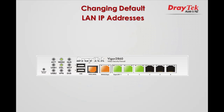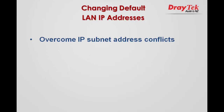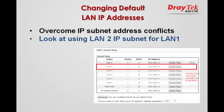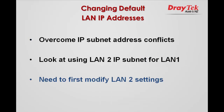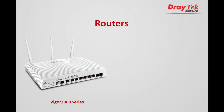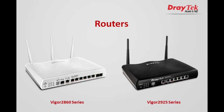Hello everyone. In this video we will describe the process required to change the default LAN IP subnet address in the router. There can be a conflict with another default IP subnet address used by another LAN setting in the router. In the example shown in this video, we will change the IP subnet settings for LAN 1 to be that used by LAN 2, so we will need to modify LAN 2 before we can make the required changes to LAN 1. This procedure applies to both the Vigor 2860 series and Vigor 2925 series routers.